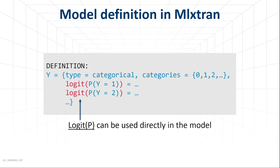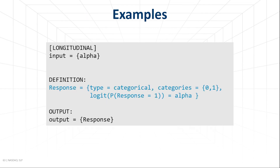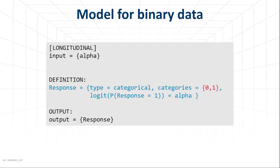For the estimation of model parameters, it is more convenient to work with values from minus to plus infinity, so we can use the logit directly in the model. Similarly, if categories are ordered, we can use the cumulative probabilities in the definition. Let's see a few examples starting from binary data with categories 0 and 1. We define the logit of the probability that a response takes one of the values, for example 1.